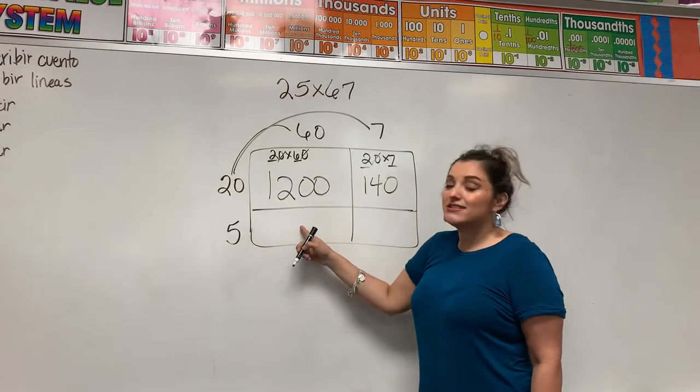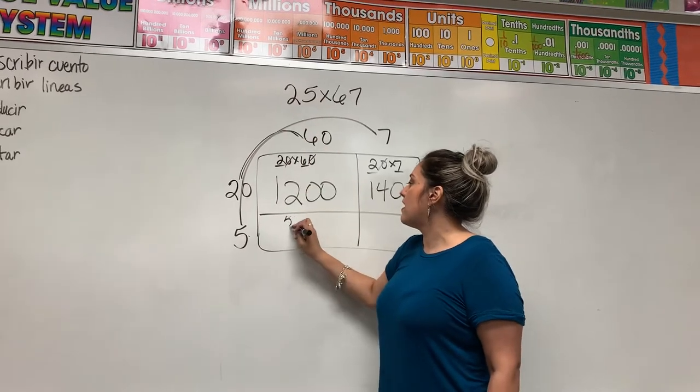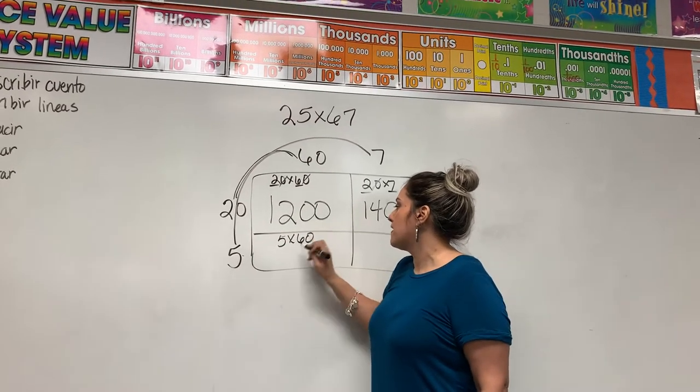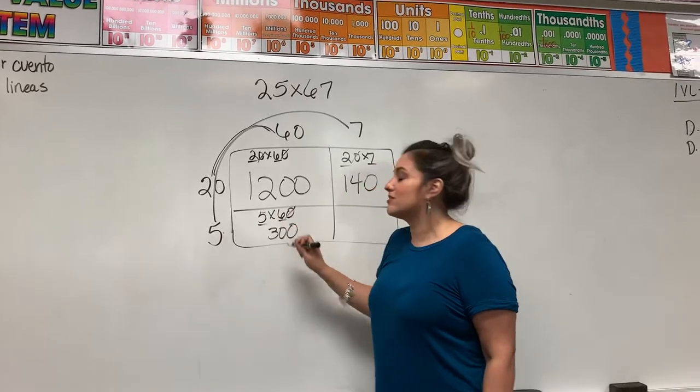The next quadrant here is going to be for my 5 and the 60. 5 times 60. Well, 5 times 6 is 30 plus my extra 0.